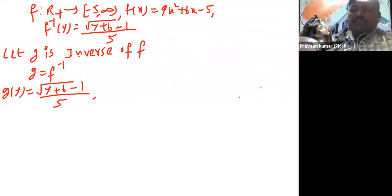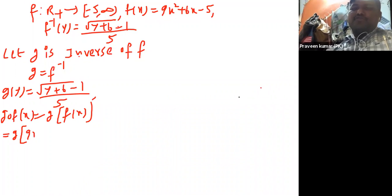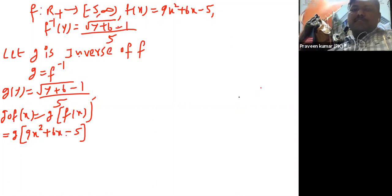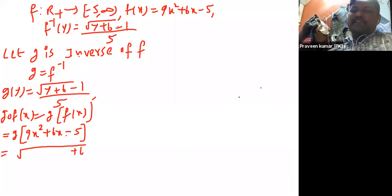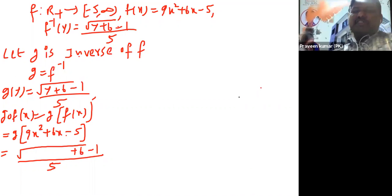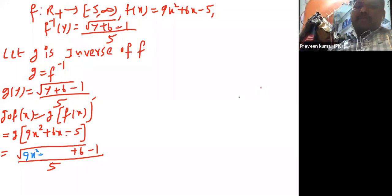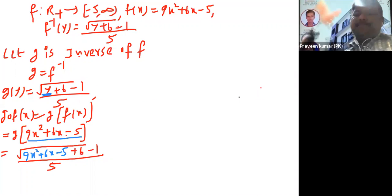f of x we already know. Consider g circle f of x — how to write g of f of x? That is equal to g of f of x, and what is the f of x value? It is 9x squared plus 6x minus 5. Now this step is very very important: g of y equals root of y plus 6 minus 1 by 3. I left an empty place, and in that empty place I can write this complete value. That's why I change color — in the empty place I write 9x squared plus 6x minus 5.